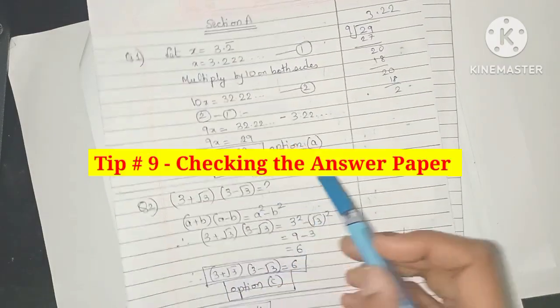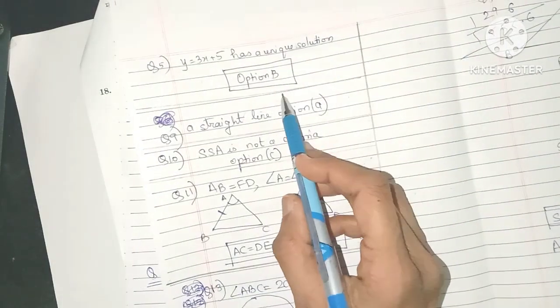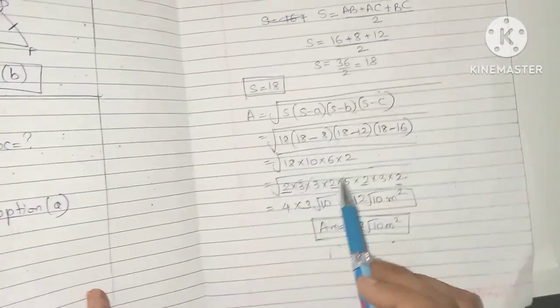The next tip is checking the answer paper well. Always plan in such a way that you give at least 15 minutes for checking. During this time, don't just browse through the answer.